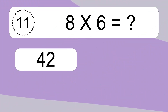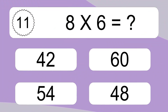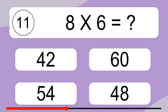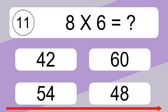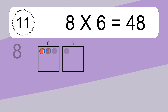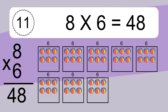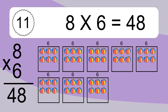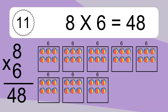8 times 6 equals what? 8 times 6 equals 48. We have 8 boxes, and each box has 6 colorful balls inside. If you count all the balls in all the boxes together, you will have 8 times 6 balls. This equals 48 balls.